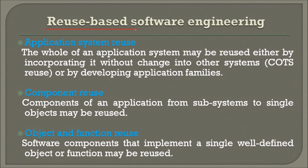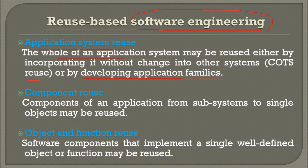Now, reuse-based software engineering — there is a reuse-based aspect of software engineering as well. First is application system reuse, where the whole application system may be reused either by incorporating it without change into other systems, like COTS reuse, or by developing application families. Second is component reuse, where components from subsystems to single objects may be reused. Third is object and function reuse, where software components implementing a single well-defined object or function may be reused.